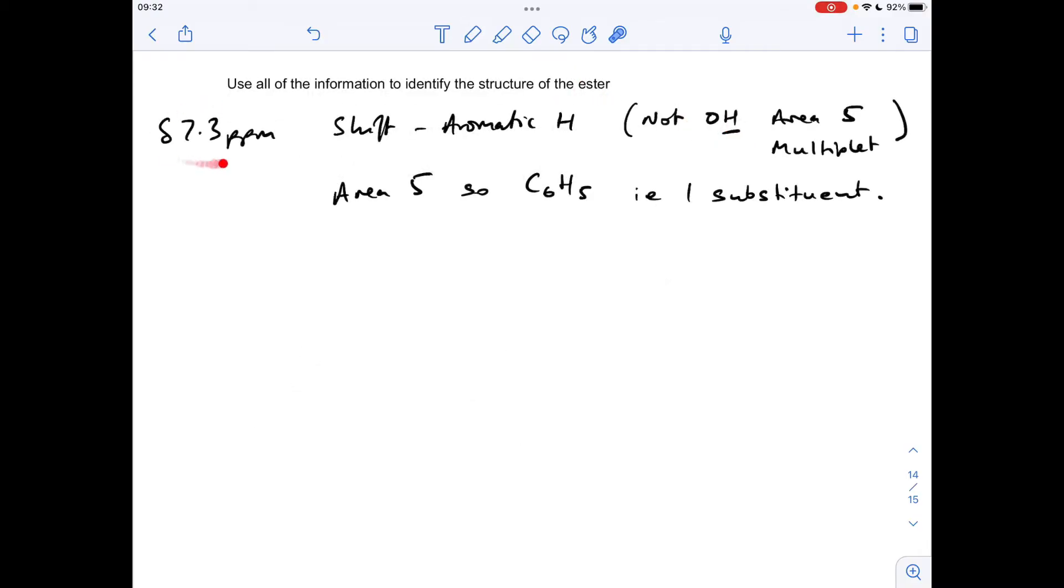OK, so I've just summarized that, so delta 7.3 ppm, the shift value tells us we've got aromatic protons, and a little reminder there why we've ruled out OH protons, the area's 5 and it's a multiplet. And a little bit about the area, so the area of 5 tells us we've got C6H5, in other words we've got one substituent on the benzene ring.